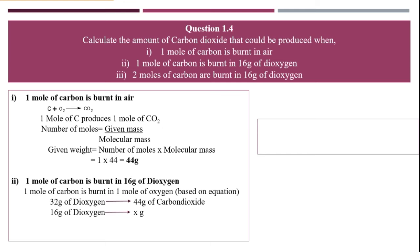Dioxygen molecular mass is 32 grams. So when 32 grams of dioxygen can produce 44 grams of carbon dioxide, therefore 16 grams of dioxygen can produce 22 grams of carbon dioxide. This is how you approach a question like this - you always put down the equation and then analyze it based on the information given in the question.